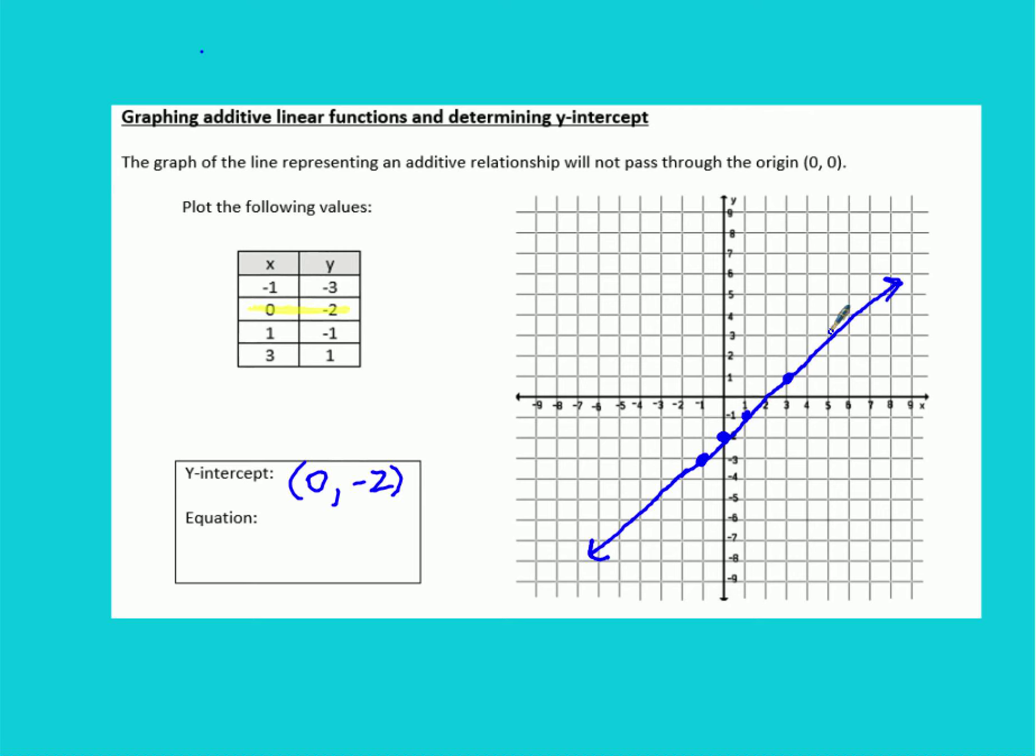Our b is our y-intercept. We already found that our y-intercept is negative 2. That means the equation for this line is just going to be y equals x minus 2.